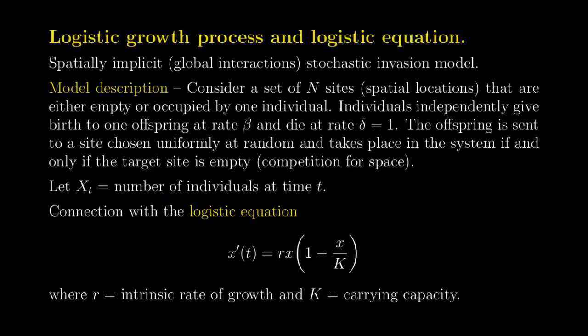I briefly remind you that to define the logistic growth process, you start with a set of capital N sites. Those sites can be empty or occupied by one individual. Exactly like in the simple birth and death process, individuals give birth at rate beta and die at rate one. But contrary to the simple birth and death process, the offspring is now sent to a site chosen uniformly at random among the set of N sites, and this offspring can only take place in the system if and only if the target site is empty, which models competition for space.